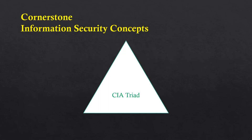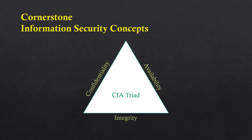The CIA triad comprises three main components: confidentiality, integrity, and availability. These are the three main cornerstone concepts, or the three main pillars, of information security. Keep in mind that in some books and articles, the CIA triad is referred to as AIC — availability, integrity, and confidentiality. The CIA triad is a security model designed to balance the protection of your system or data.